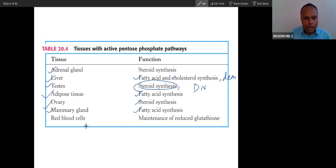Mammary gland - again fat synthesis. RBC - maintenance of glutathione, maintenance of membrane. Glutathione is required for membrane. Maintenance of membrane integrity, lipid of membrane.